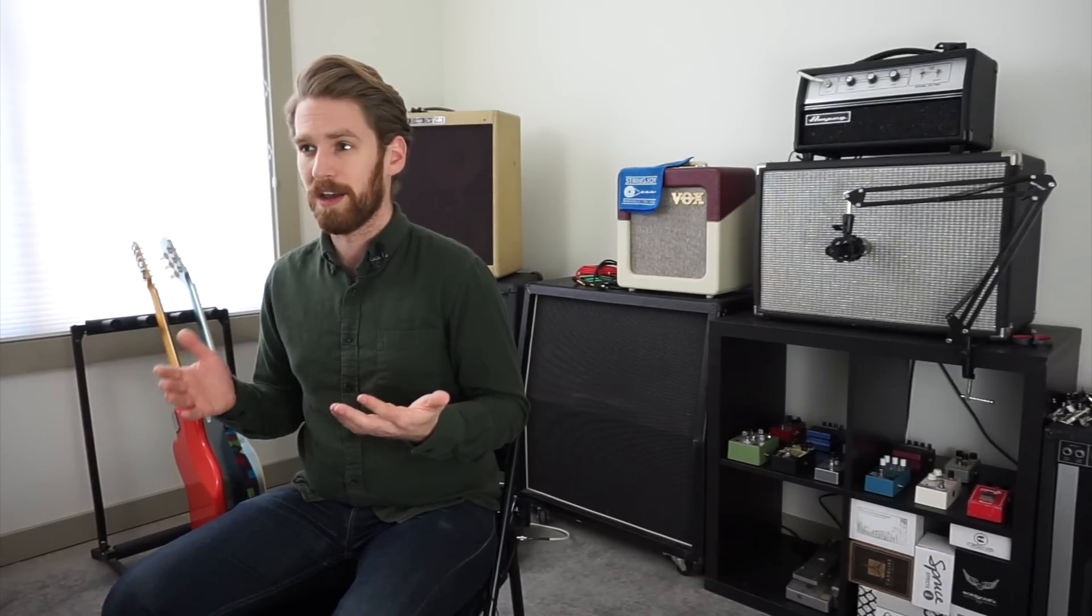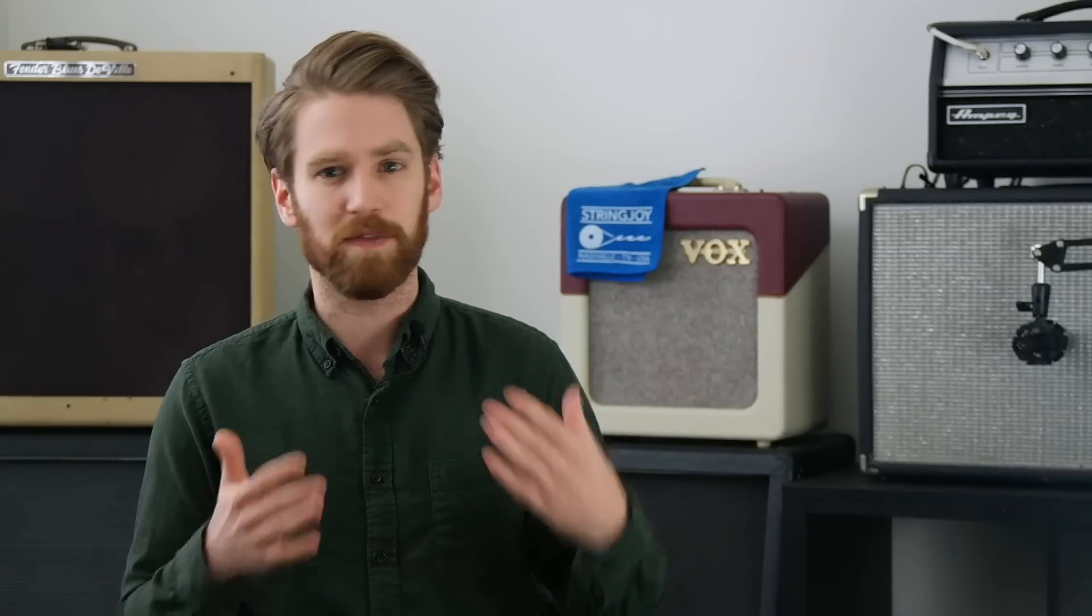The first thing we should talk about is why wound strings are used in the first place. In theory, you could make a 46-gauge low-E plain string. You could use plain strings all across the guitar. The issue is that it wouldn't play very well and it wouldn't sound very good either. When it comes to flexibility, plain steel strings have less flexibility than a wound string of the same gauge. So those very, very heavy plain steel strings on your hypothetical all plain steel strat would be really, really hard to bend. Second, they just wouldn't sound very good. When you get that thick of a diameter plain steel string, it's going to have a very shrill and overpowering tone that just wouldn't blend in with the rest of the set.